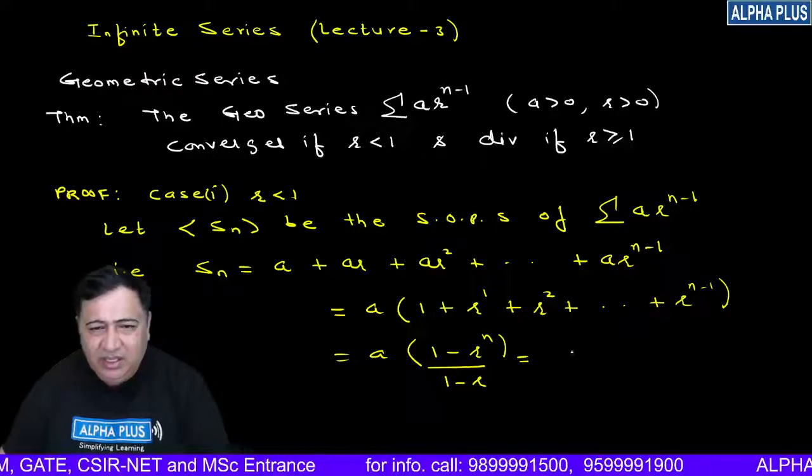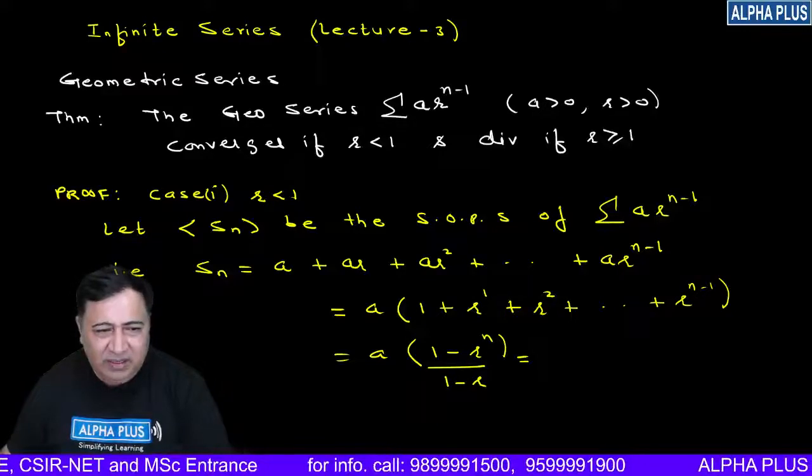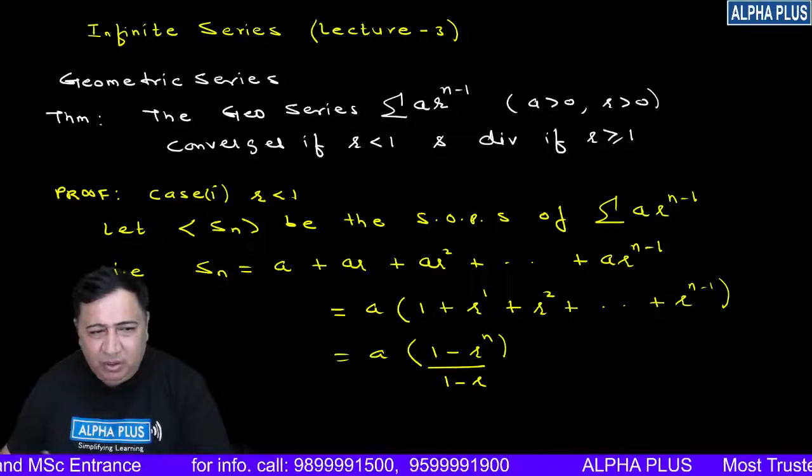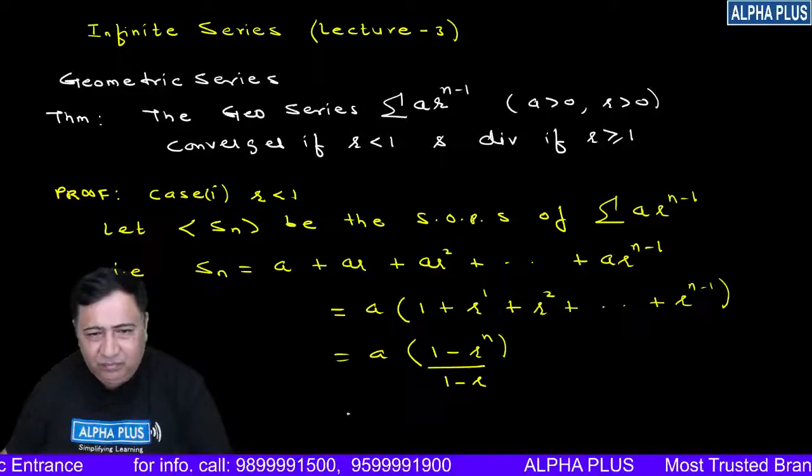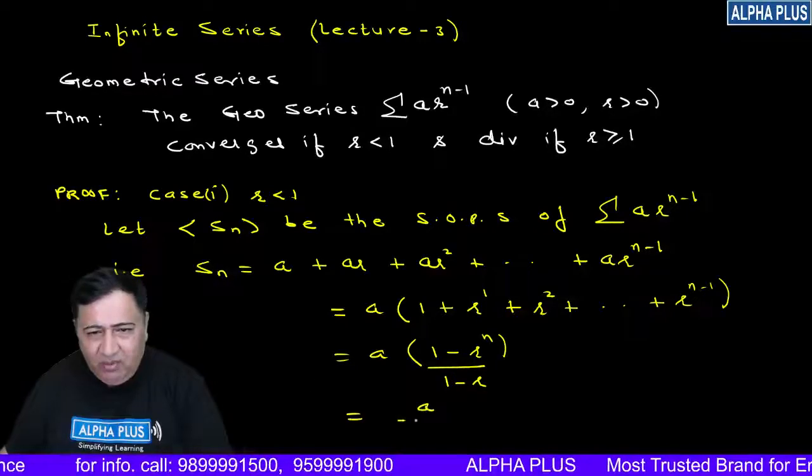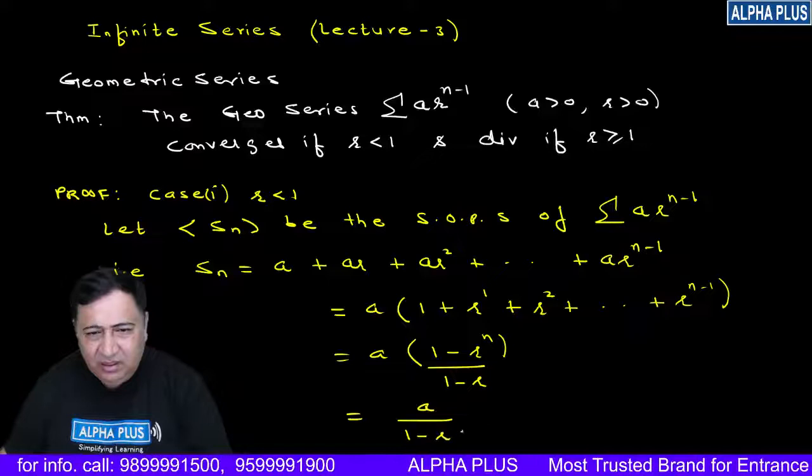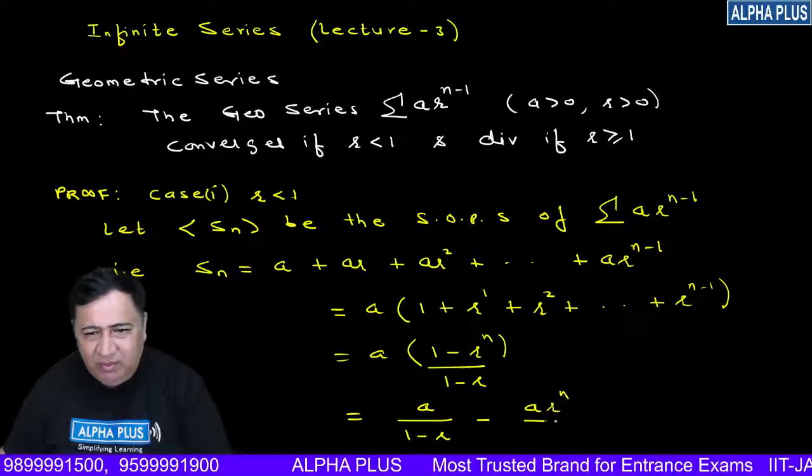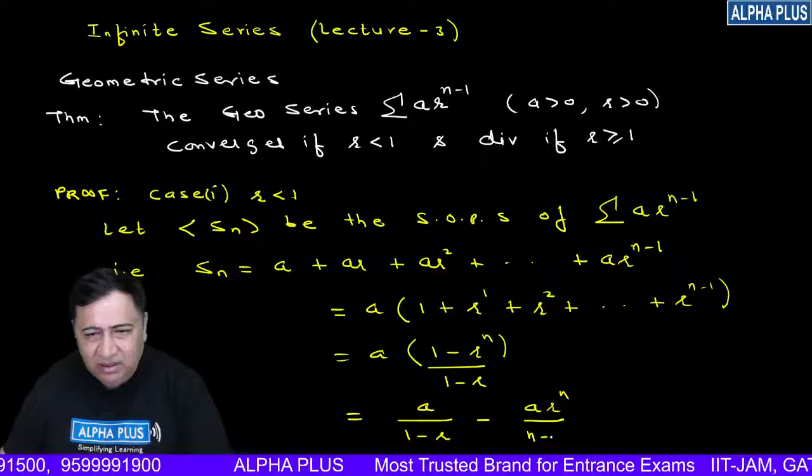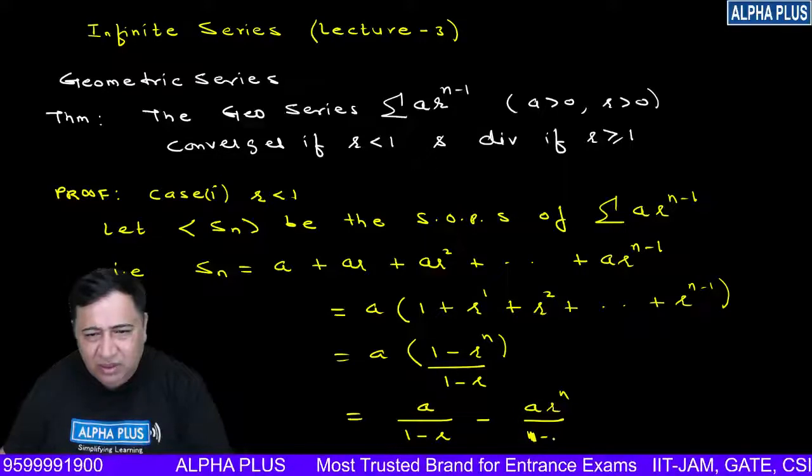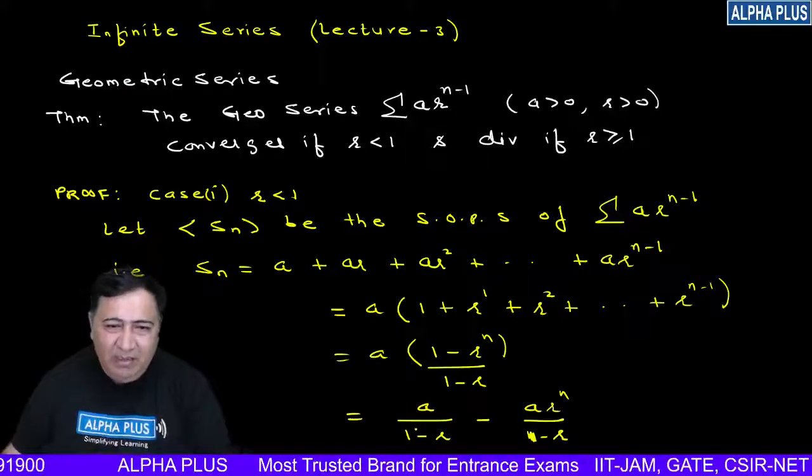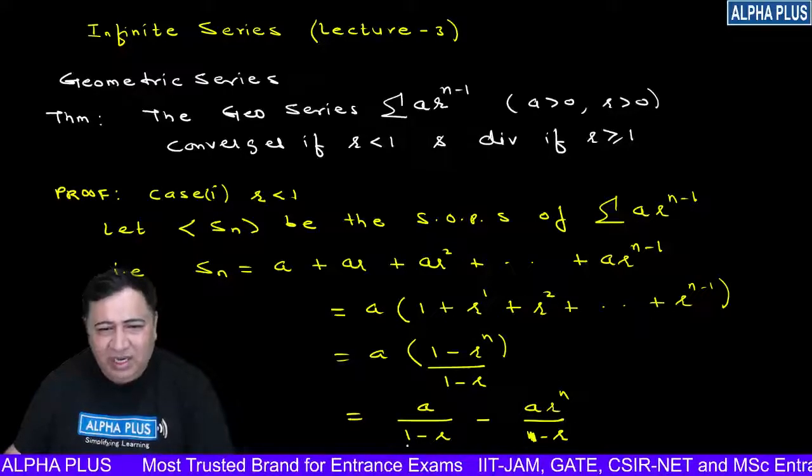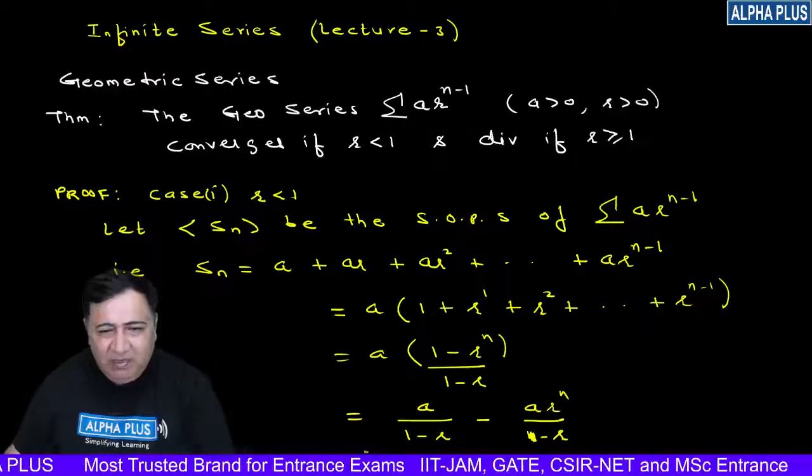Can we break this expression into two parts? a/(1-r) - a·r^n/(1-r). So if I write Sn, this becomes a/(1-r) - a·r^n/(1-r).